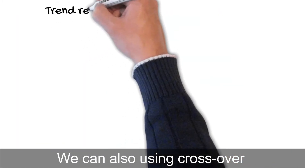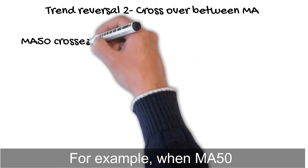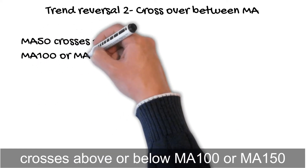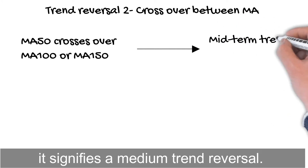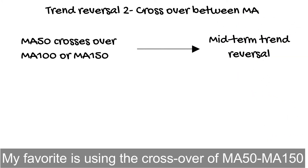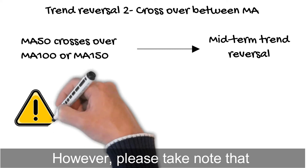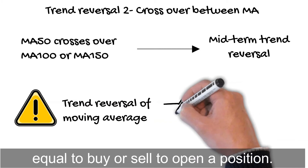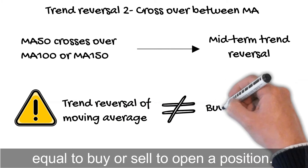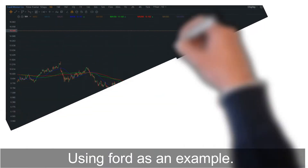We can also use the crossover between two moving averages. For example, when MA50 crosses above or below MA100 or MA150, it signifies a medium-term trend reversal. My favorite is using the crossover of MA50 to MA150. However, please note that spotting a trend reversal via moving average is not equal to a buy or sell signal to open a position. I will explain more using Ford as an example.